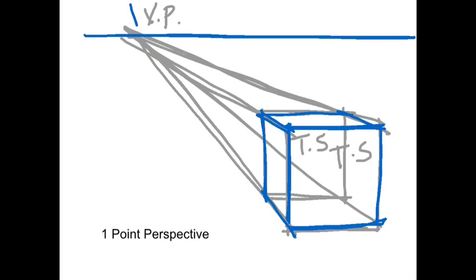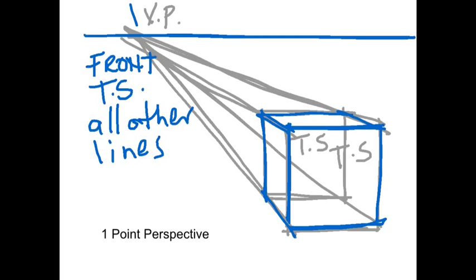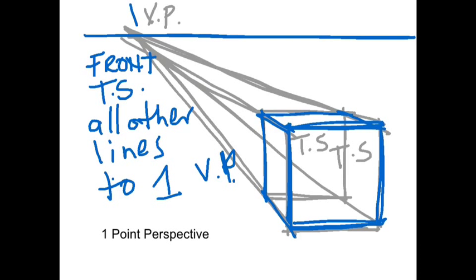So what are the features of a one point perspective? Firstly, front is true shape. Then all of the other lines, all other lines go to one vanishing point. But really if you're looking at a drawing and you're thinking, I think this is a perspective drawing, I wonder whether it's one point or two point. Really what you've got to look for is, can I see any front surfaces that look true shape? If you can, then most likely you're dealing with a one point perspective.